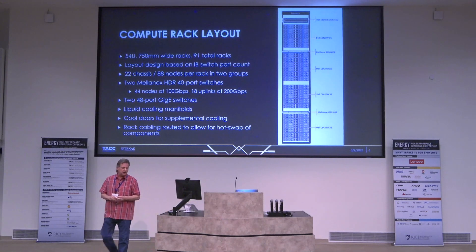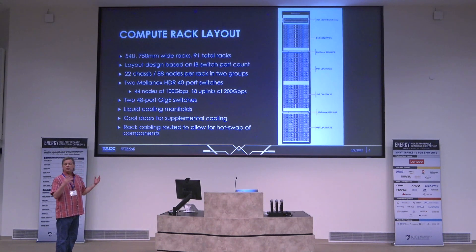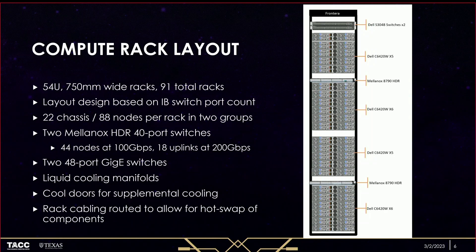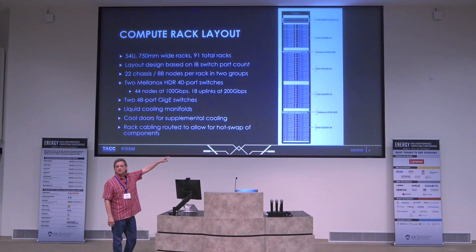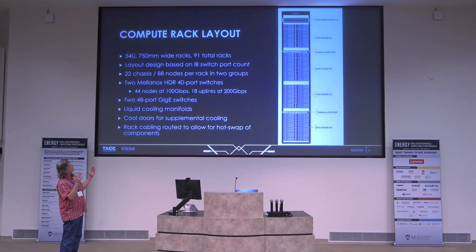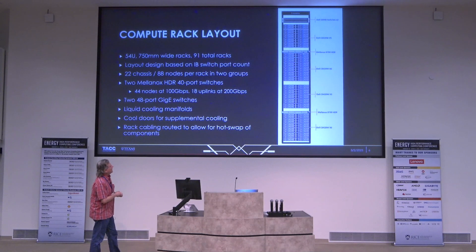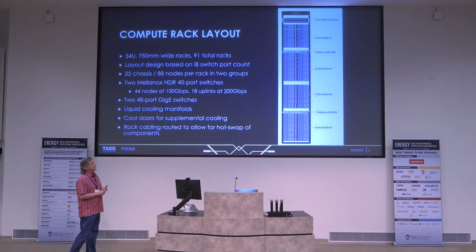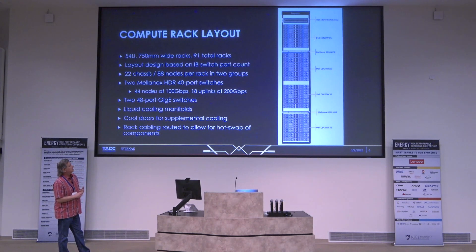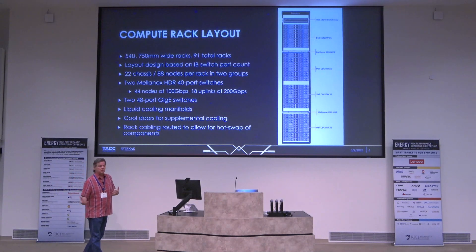The racks themselves require careful planning around cooling. We've had to go to very deep racks — about five and a half feet deep — to accommodate power distribution, networking, and chilled water distribution in the back of the rack. Every single node has its own connection to the liquid manifold. We've basically added a caboose to the back of the rack just to provide room for the manifolds to do the liquid cooling. This is something to keep in mind when designing and planning these systems in the future.